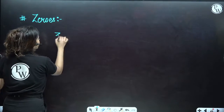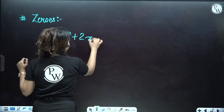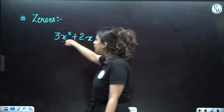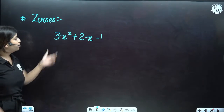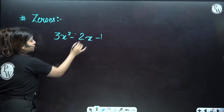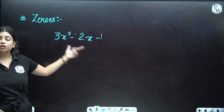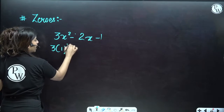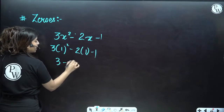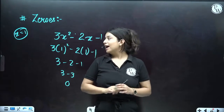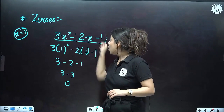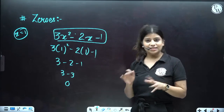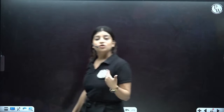What are zeros of a polynomial? For example, take 3x² + 2x − 1. The zeros of a polynomial are the values of x for which the expression equals 0. For example, if I put x = 1: 3(1)² + 2(1) − 1 = 3 + 2 − 1 = ... actually, 3 − 2 − 1 = 0. So x = 1 is the zero of this polynomial. That means if we put x = 1 into the expression, we get 0 as the answer.